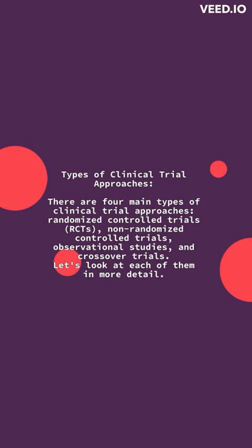Types of Clinical Trial Approaches: There are four main types of clinical trial approaches — randomized controlled trials (RCTs), non-randomized controlled trials, observational studies, and crossover trials. Let's look at each of them in more detail.